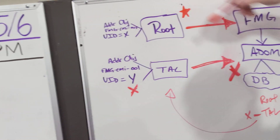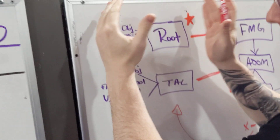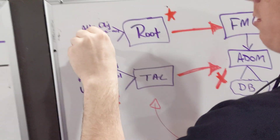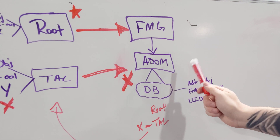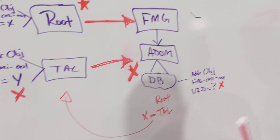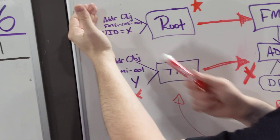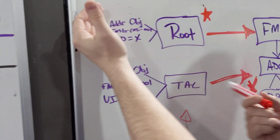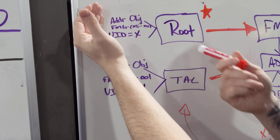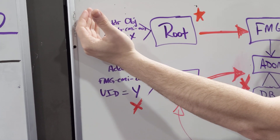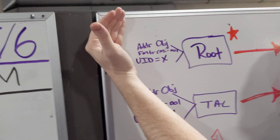Periodically it's going to keep going back out and checking, because the FortiManager is the authoritative master. It's going to ask: are these in line with the authoritative master? If somebody goes onto the firewall and changes things, you're going to get a little icon saying it's out of sync. You'll have to figure out whether that change should have happened — if it should, you need to synchronize that change into the authoritative database. If it shouldn't have happened, you push the authoritative copy and overwrite it.